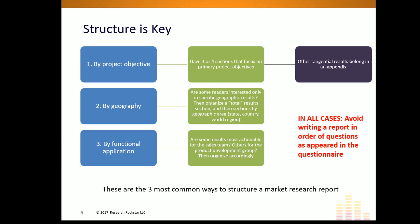If we are going to divide the core content into modules, we have to think about structure. Typically that structure follows one of three patterns. The most common is to structure the core content by project objective. Most survey research projects have two to four project objectives, and you would simply have a subsection for each one — turning a big blob of 30 slides into three or four organized subsections.